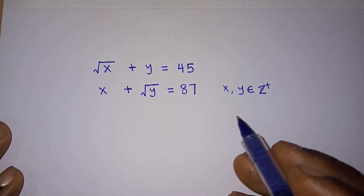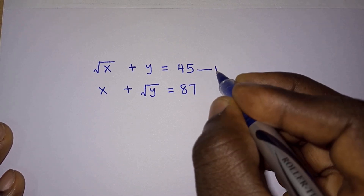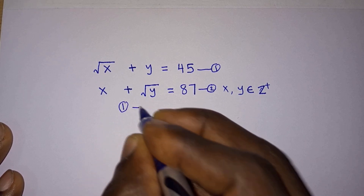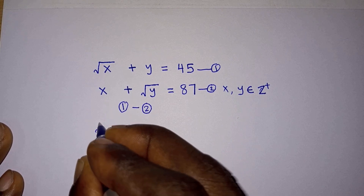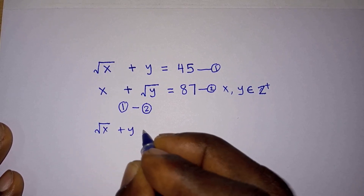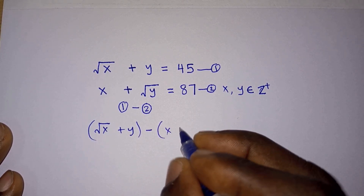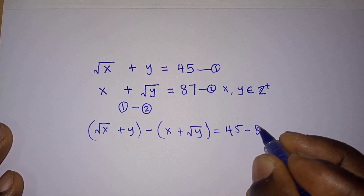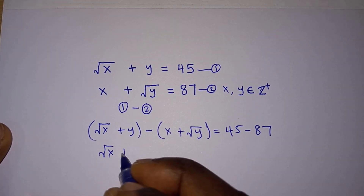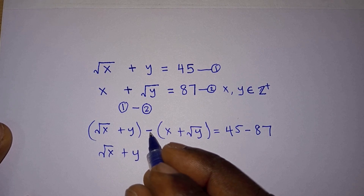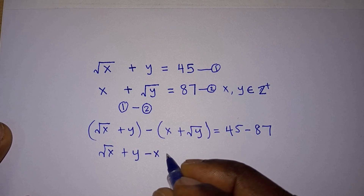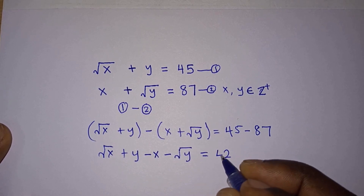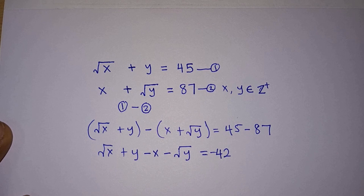If you are new here, please subscribe. Now let's get started. We will call the first equation equation one and the second equation equation two. Then we will compute equation one minus equation two, giving us: square root of x plus y minus x plus square root of y, equal to 45 minus 87. Distributing the negative one, we have negative x minus square root of y, equal to negative 42.